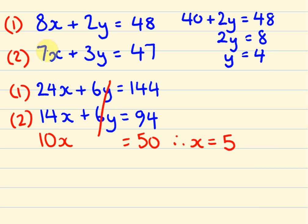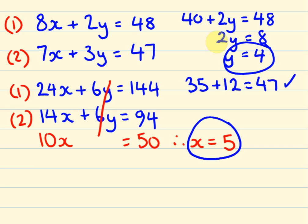I'm going to substitute it into this second equation here. So, if X is 5, 7 times X is 35. Plus 3Y, so 3 times 4 is 12. And indeed the answer is 47. The answer is correct and therefore our two numbers are correct. Y is 4 and X equals 5.